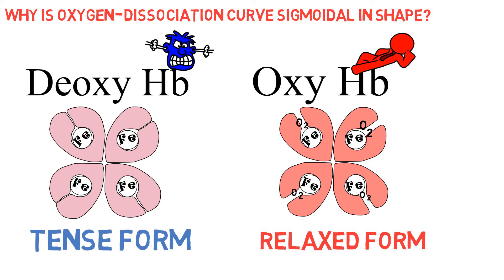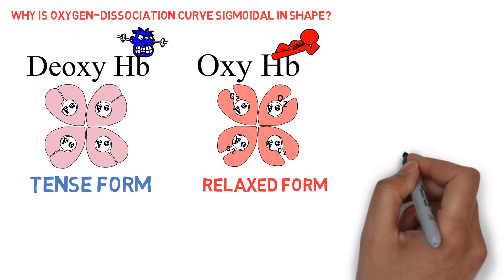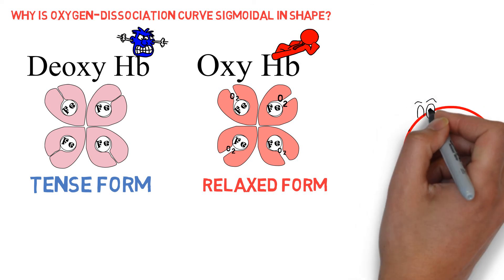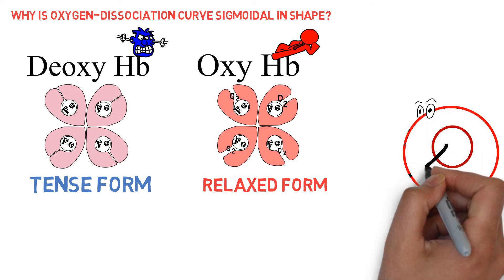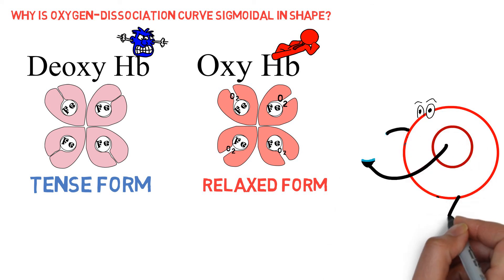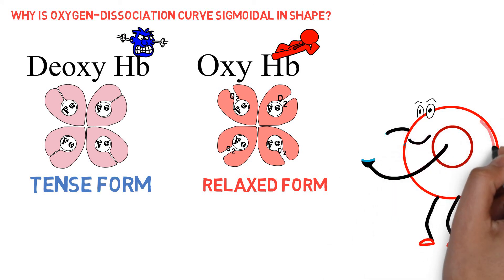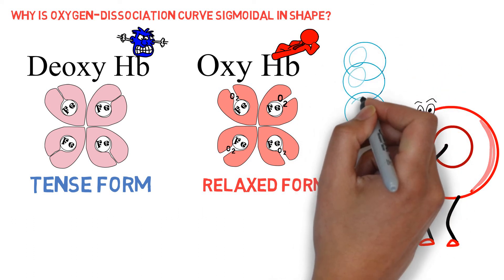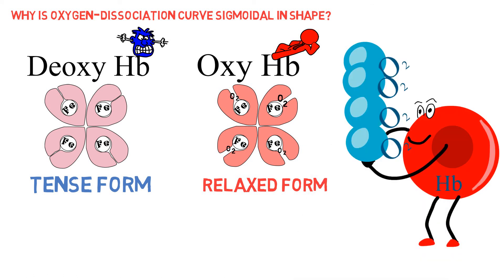The oxyhemoglobin dissociation curve relates percentage saturation of the oxygen-carrying power of hemoglobin (SaO2) to the partial pressure of oxygen (PO2). This curve has a characteristic sigmoid shape due to the T-R configuration interconversion. Combination of the first heme in the hemoglobin molecule with oxygen increases the affinity of the second heme for oxygen, and oxygenation of the second increases the affinity of the third, and so on, so that the affinity of hemoglobin for the fourth oxygen molecule is many times that for the first. Notably, small changes at low PO2 lead to large changes in SaO2 saturation.